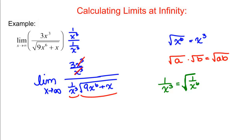So we rewrite our problem as the limit as X goes to infinity of 3 divided by the square root of 1 over X to the 6th times 9X to the 6th plus X. Now we can combine the two square roots.